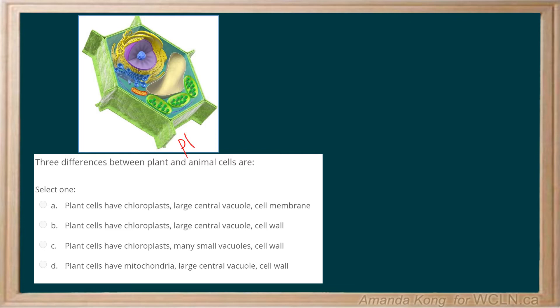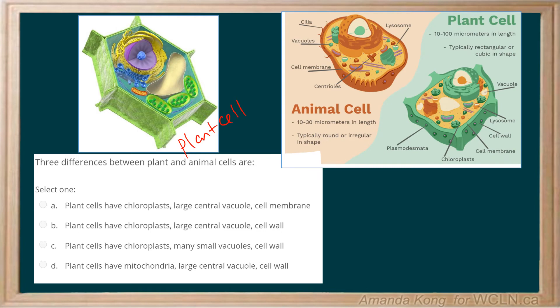As you can see, I have a diagram of a plant cell right over here. So the three differences between animal and plant cells — this is an animal cell, this is a plant cell. There are many differences, but the three main ones: you can notice that plant cells have chloroplasts, which allows them to have their distinctive green color. So plant cells have chloroplasts — that is correct.